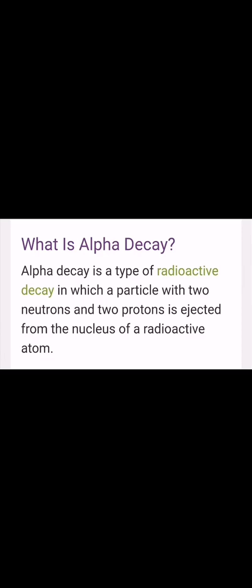Alpha decay is a kind of spontaneous radioactive decay process in which a large-sized nucleus — usually a nucleus with mass number greater than 210 — spontaneously undergoes a decay process which leads to the emission of an alpha particle. Now, why do only large-sized nuclei undergo alpha decay and not small or medium-sized nuclei?